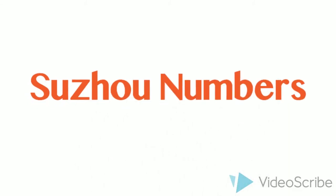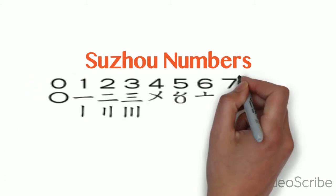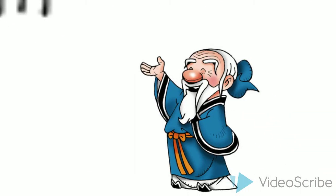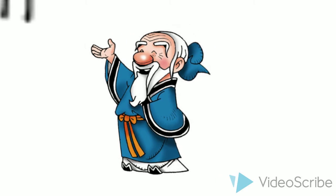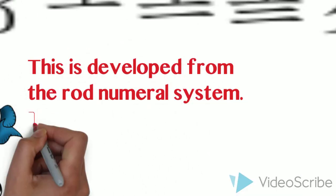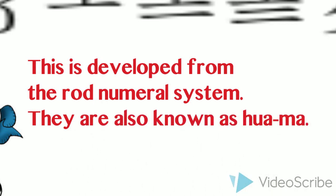The Suzhou number system is a version of the rod numeral system which incorporated the number zero. It was a positional system used as a form of shorthand in bookkeeping and accounting and was popular in markets, particularly in Hong Kong, until the 1990s when it was replaced by the modern numerals.